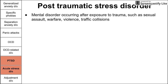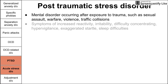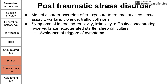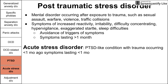PTSD is a mental disorder occurring after exposure to trauma such as sexual assault, warfare, other types of violence, and traffic collisions. Symptoms include increased reactivity, irritability, difficulty concentrating, hypervigilance, exaggerated startle reactions, and difficulty with sleep. People with PTSD might avoid triggers of their symptoms, such as loud noises. Symptoms must last for at least one month. Acute stress disorder is a PTSD-like condition with similar symptoms and similar avoidance of triggers, except the trauma occurred less than one month ago. Acute stress disorder often evolves into PTSD after one month following the trauma.